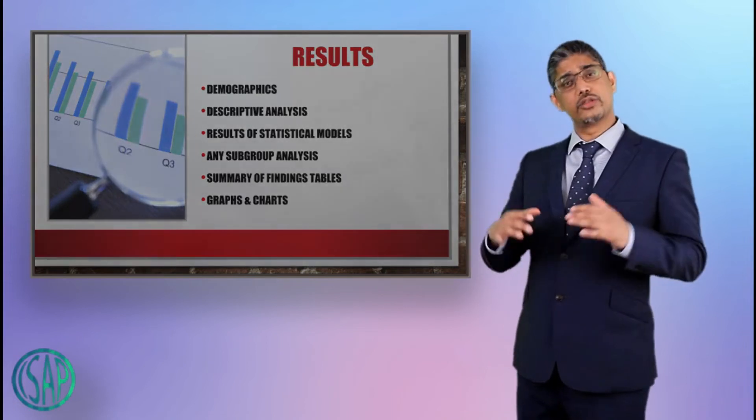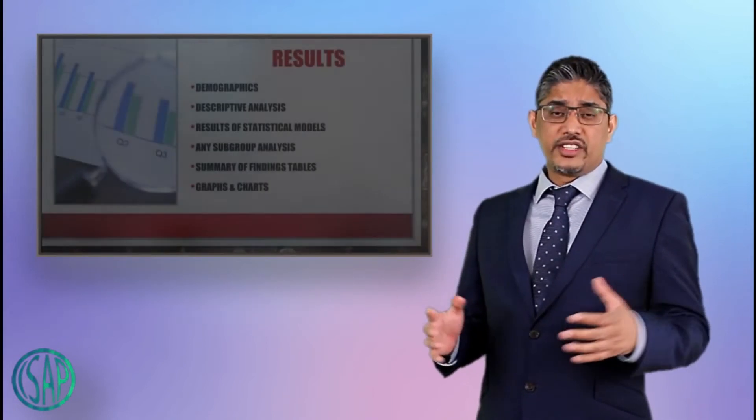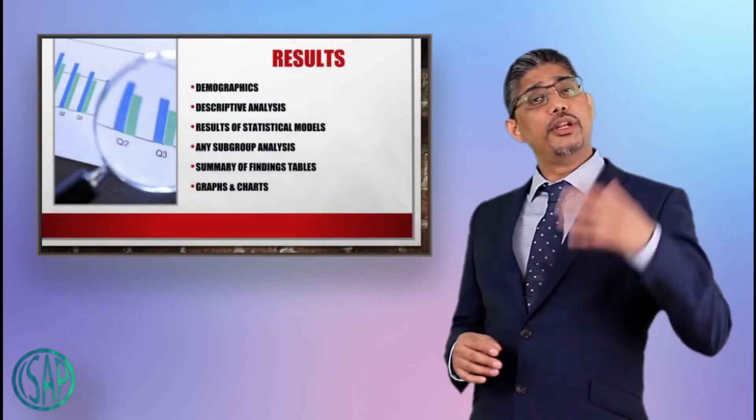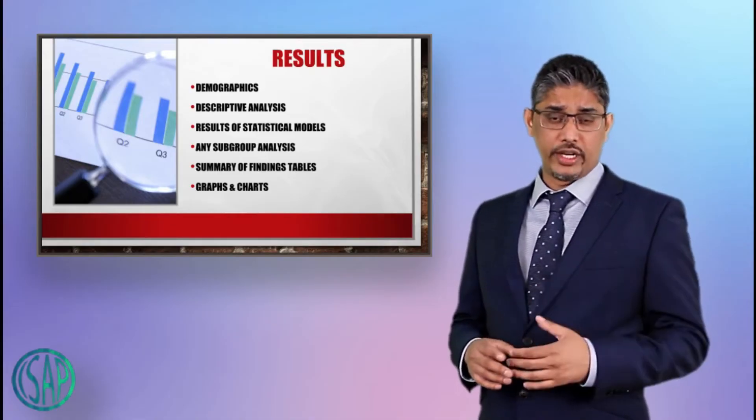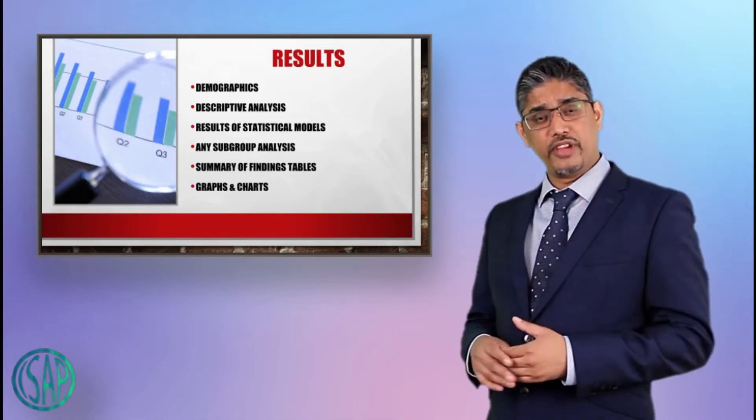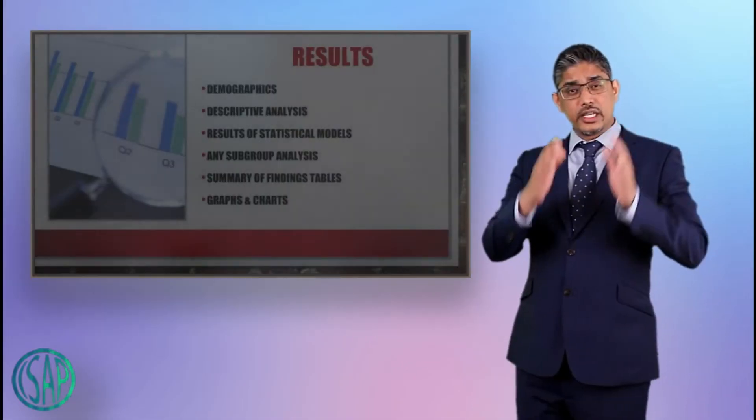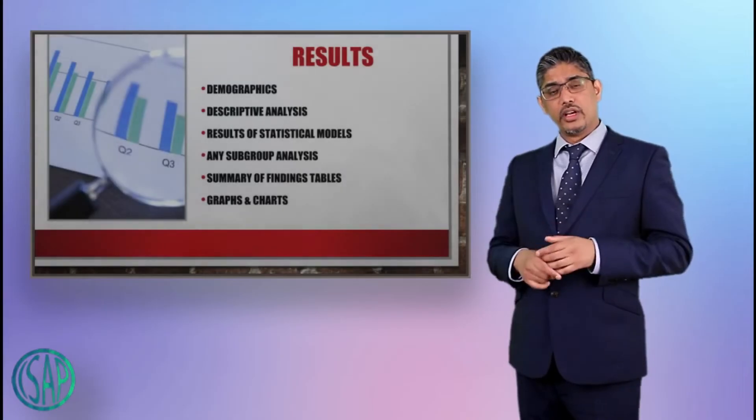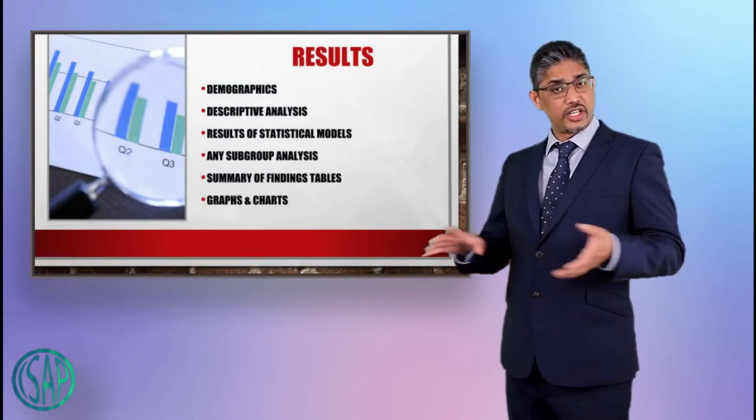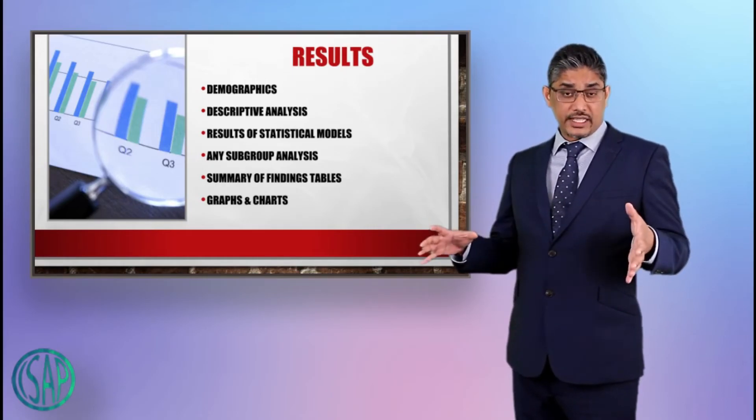The way to write up the results is in the same order. For example, you can write summary statistics for demographics like how many studies you included, number of patients, number of males, number of females, and then you can write a descriptive analysis. Simply look at each variable summary statistics like mean, median, standard deviation, skewness and kurtosis and summarize them. That is descriptive analysis.